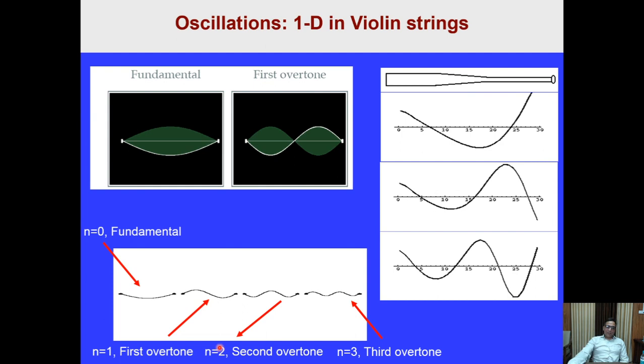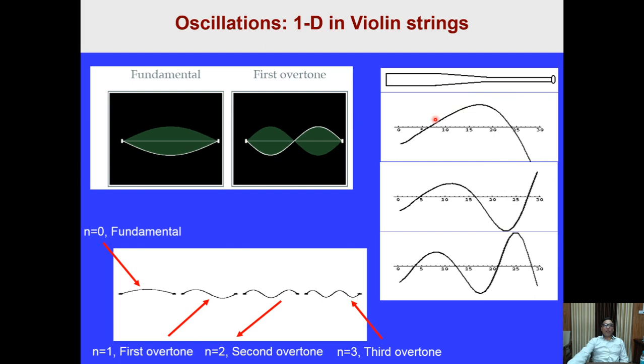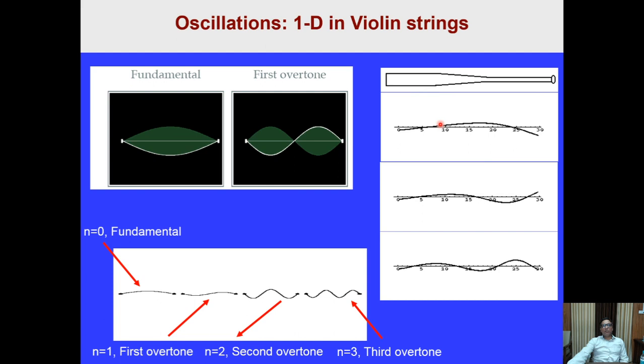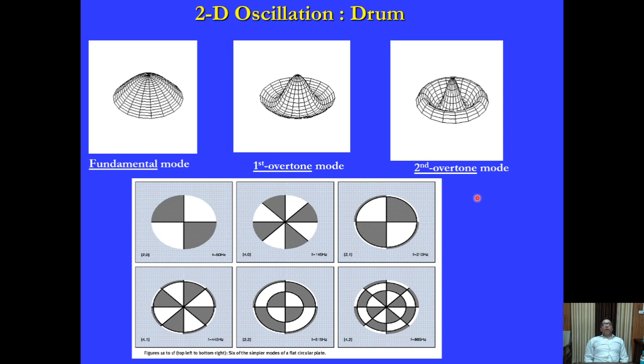An organ pipe also demonstrates these oscillations — one end open, one end closed — and you can see how nodes and anti-nodes form. These are simple 1D oscillations. Moving to 2D, we take the example of a drum: oscillations occur in both the x and y directions. The rim of the drum acts as a node, and the membrane goes up and down in the radial and orthogonal directions.